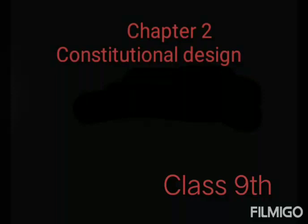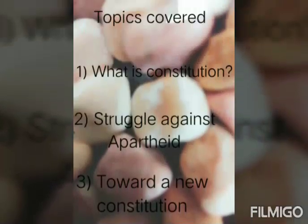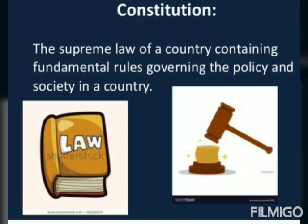Good morning students. Today we will do our second chapter of Political Science class 9, Constitutional Design Part 2. In the last session we had covered what is a constitution and the struggle against apartheid and toward a new constitution. We had covered that the constitution is the supreme law of a country containing fundamental rules governing the polity and society. We are clear with the meaning of constitution.